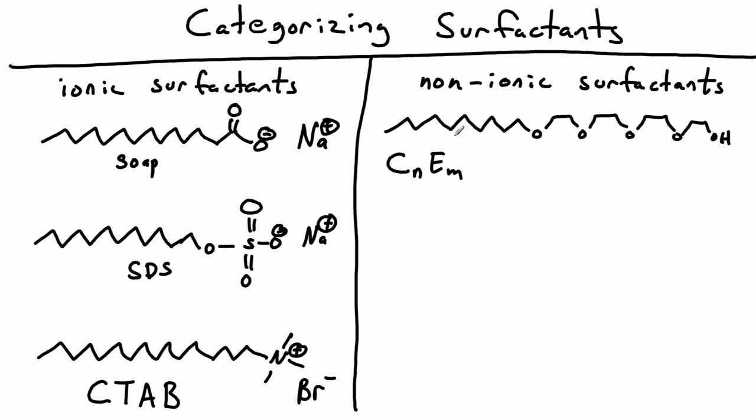Because we could imagine different lengths of chains on either side, these are typically abbreviated with the CN terminology. So here we've got 1, 2, 3, 4, 5, 6, 7, 8, 9, 10 carbons on our hydrophobe. So it would be C10. And then the number of peg units on here, 1, 2, 3, 4. So it would be C10E4.